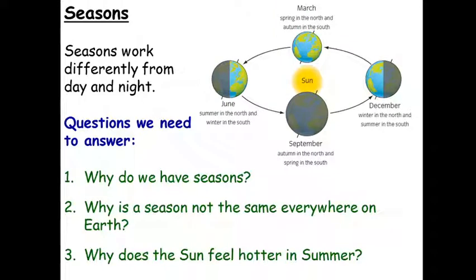When it comes to the seasons, they aren't caused by the rotation of the Earth on its axis — they're caused by something a little bit different. There are some key questions we need to answer: why do we have seasons? Why is the season not the same everywhere on Earth? And why does it actually feel hotter in the summer? Have a look at this diagram, pause the video and see if you can come up with some answers, then unpause to go through them.